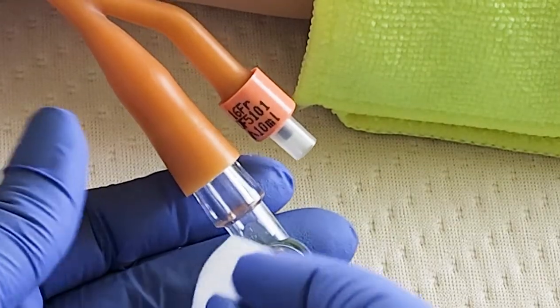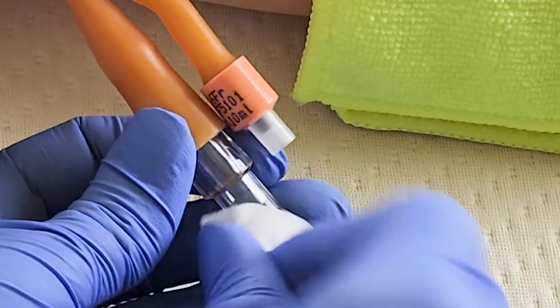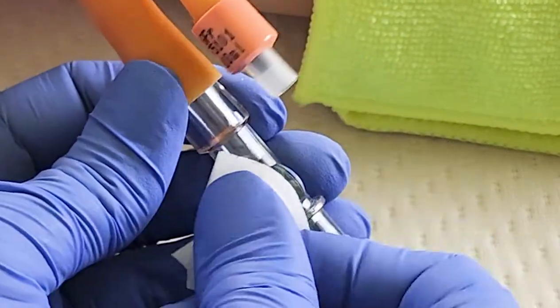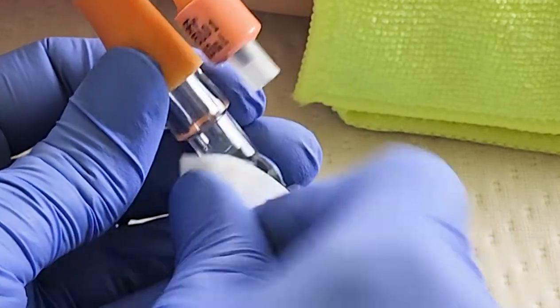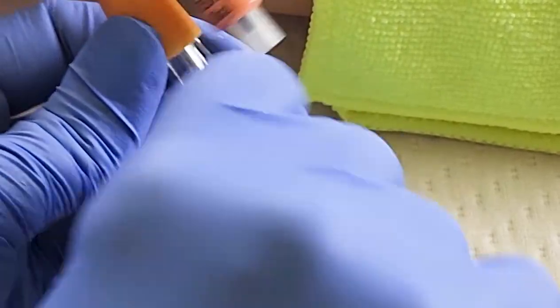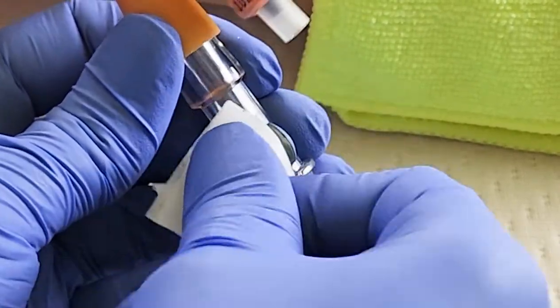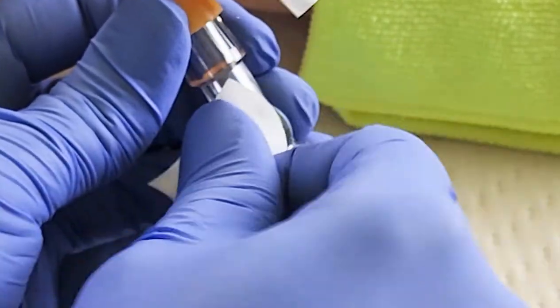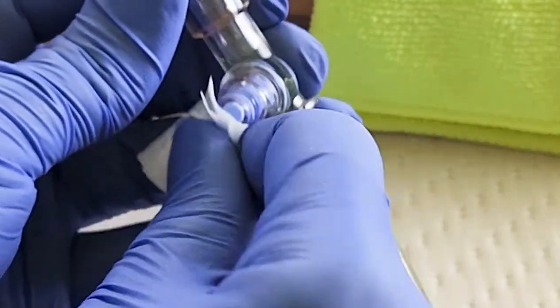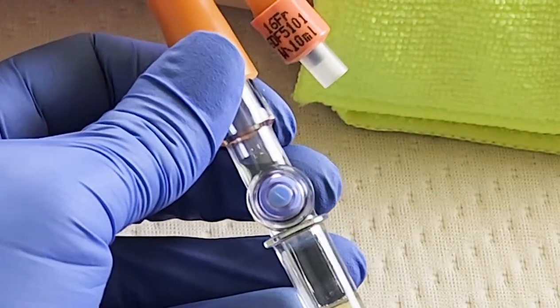Now, you're going to scrub the hub for 15 seconds. Because you want to make sure that this is really clean before you hook up your syringe. And then you want to make sure that this dries really well prior to your collection.